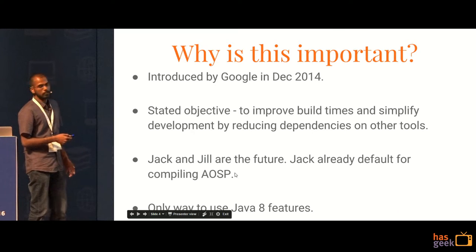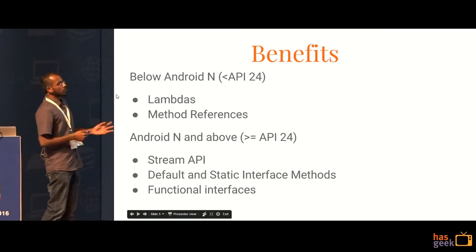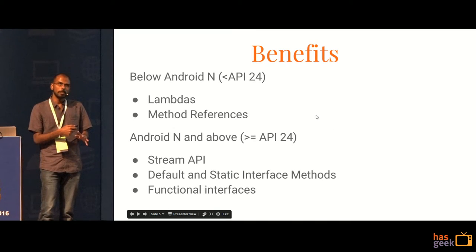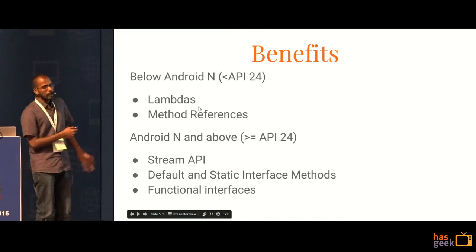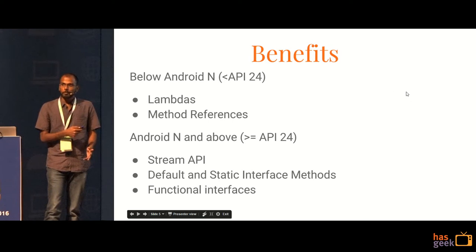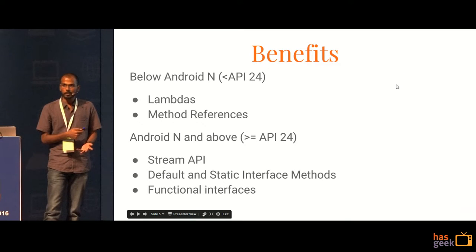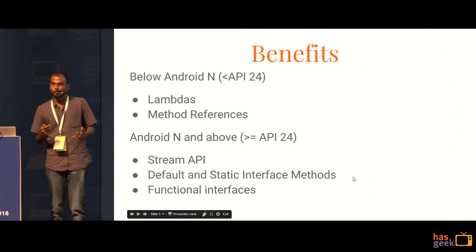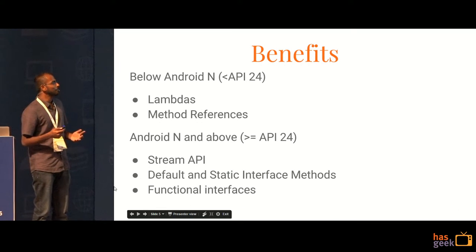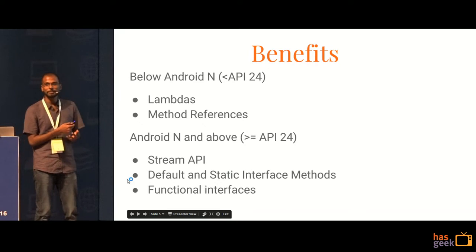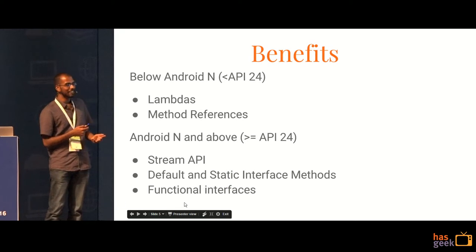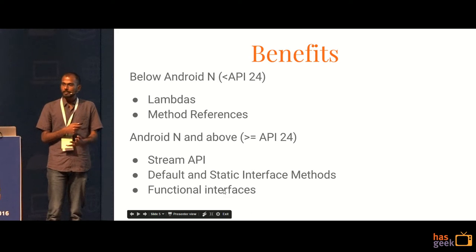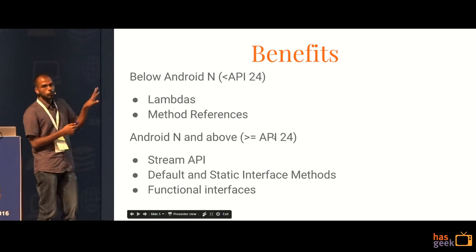It is the only way to use Java 8 features. If you are at API 23 or below, which is Android Marshmallow, you get lambdas and method references. So if you are using Retro Lambda right now for getting lambdas, then you could stop using that with this. If you are in the magical land of Android N and above where your minimum SDK is Android N, then you would get stream APIs, default and static interface methods, and functional interfaces. Stream APIs are quite awesome.